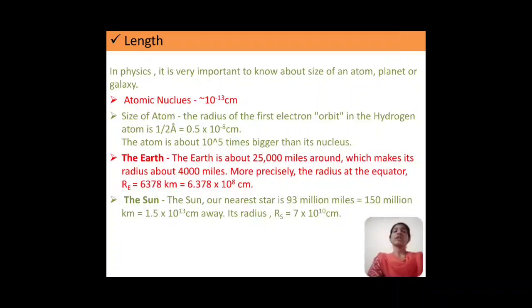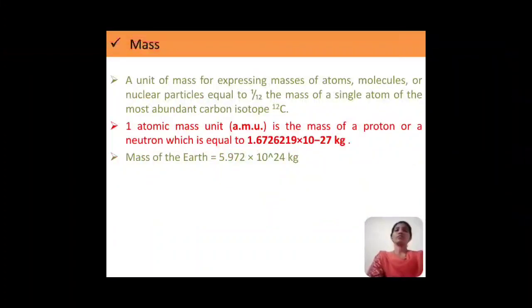Mass is always expressed in terms of 1/12 of the mass of a single atom of the most abundant carbon isotope, that is denoted by 12C. And 1 atomic mass unit, that is 1 amu, is nothing but 1.67262 into 10 raised to minus 27 kg. If we talk about the mass of the Earth, it is 5.972 x 10 raised to 24 kg.